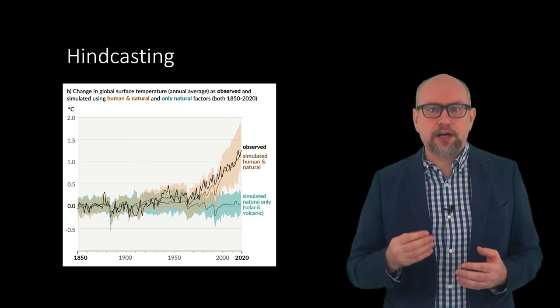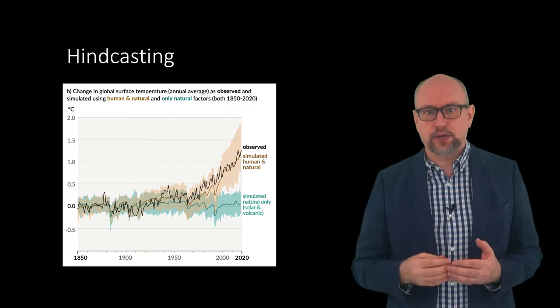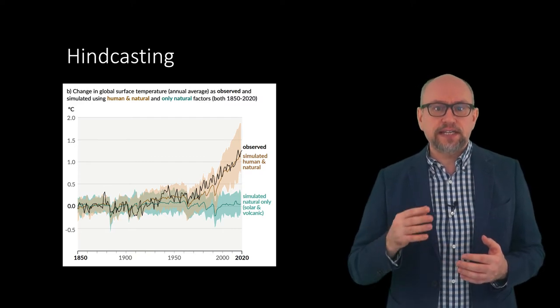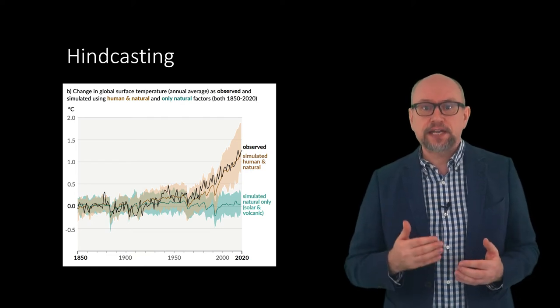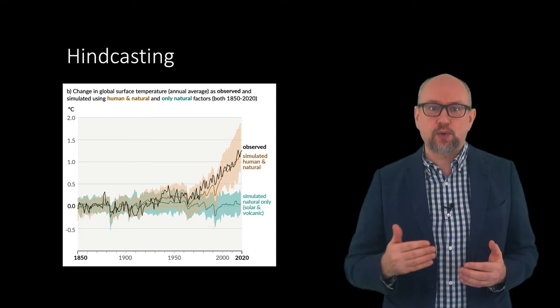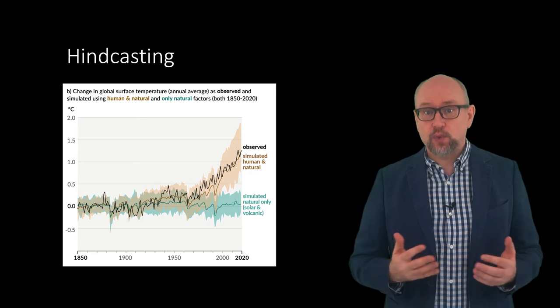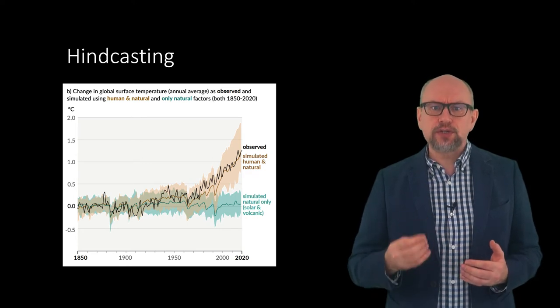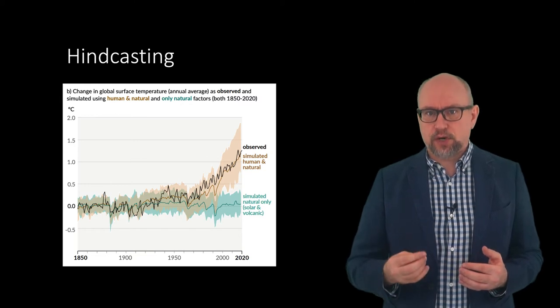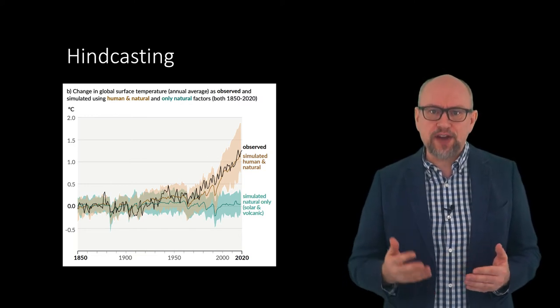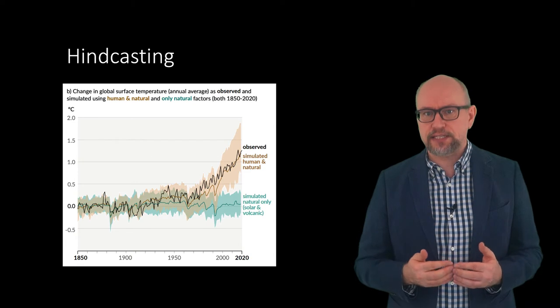Models of past climate are what are known as initial value models. They are given an initial state, say the atmosphere of 1850 or 1870, and are then allowed to freely run forward in time. Once running, these climate models do not correct themselves using observations. Such a model should be able to reproduce random variations in the climate system.